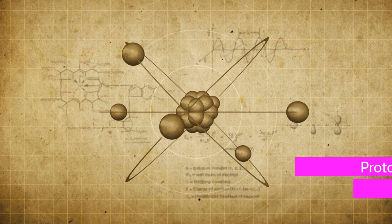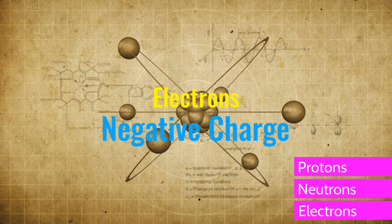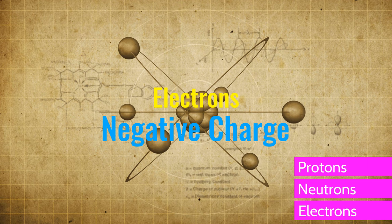Atoms are made up of three smaller particles called protons, neutrons, and electrons. The electrons have a negative charge and orbit the protons which have a positive charge. The neutrons sit between the protons and act as a type of glue to hold the protons together.